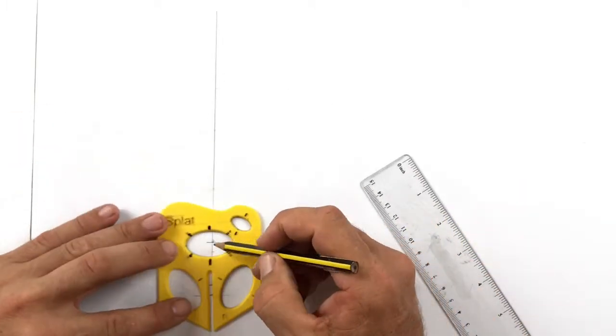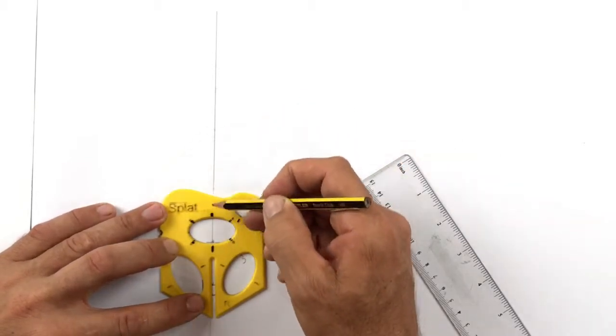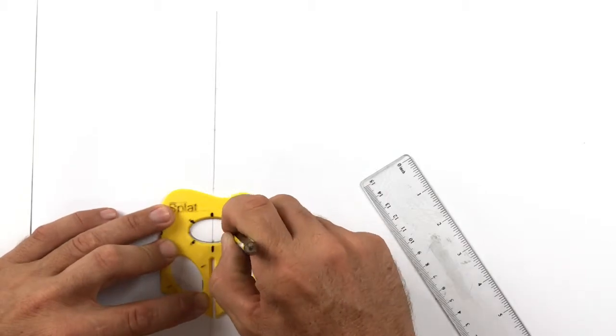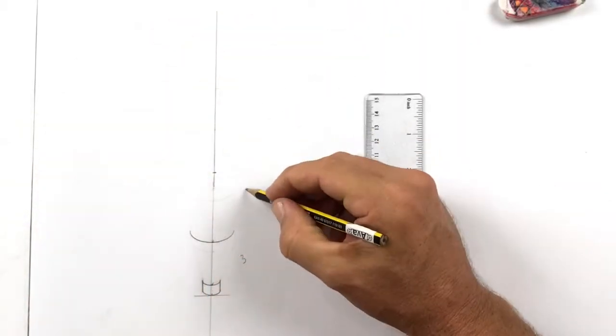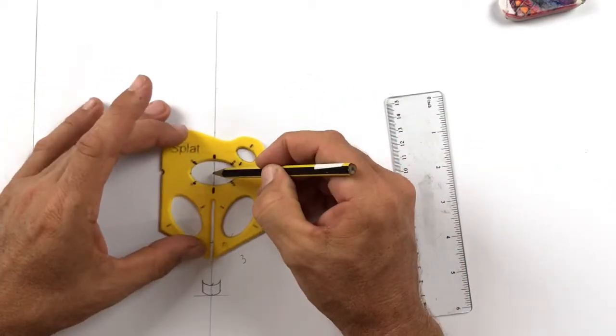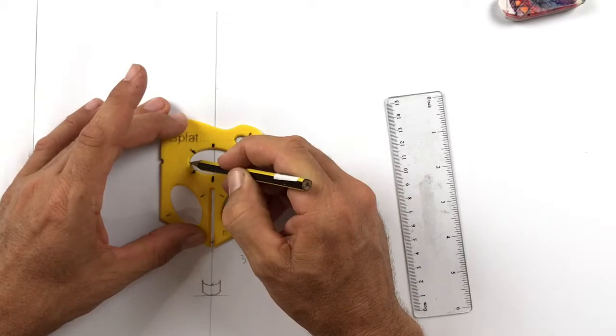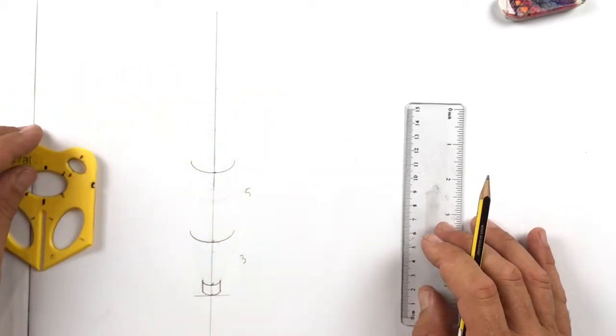Now we're using the large ellipse and the little minor axis marks. Line up with your guide lines. That's centered on that. We're drawing just the bottom half again. That's good. 5cm up now. We're going to do the same thing again. Center the ellipse. Draw the bottom half in which lines up with that mark. Good.